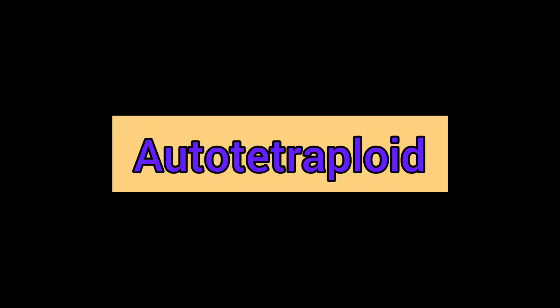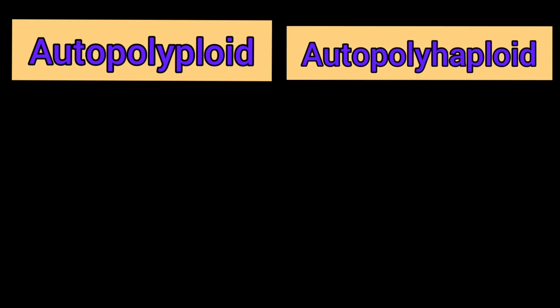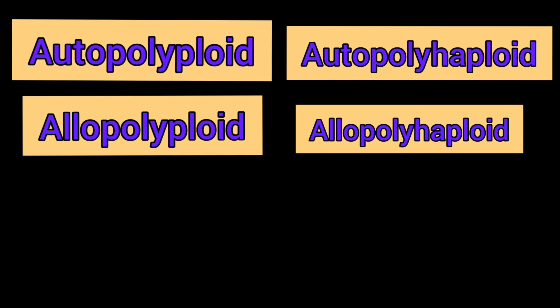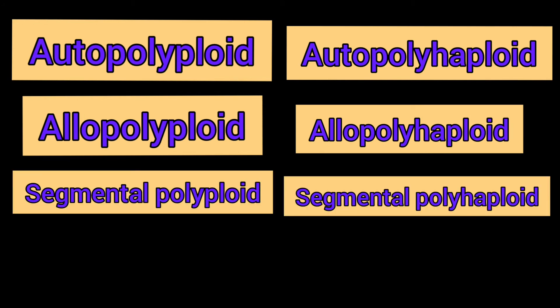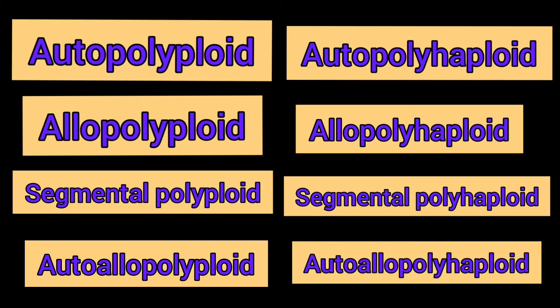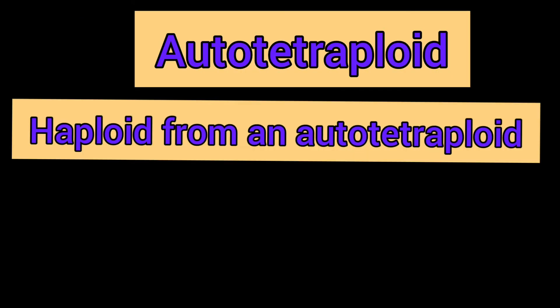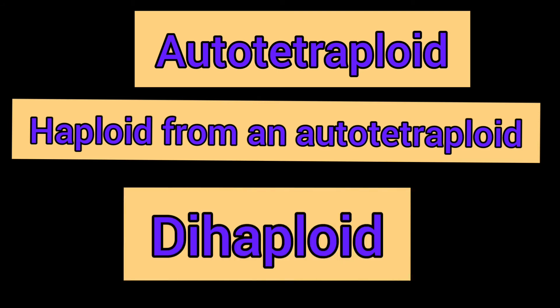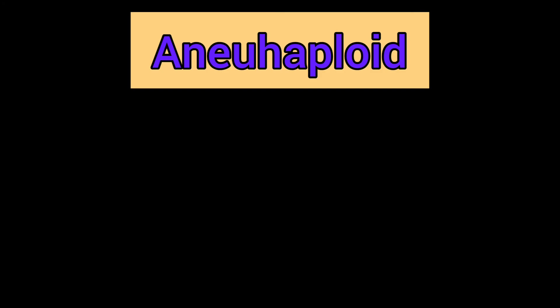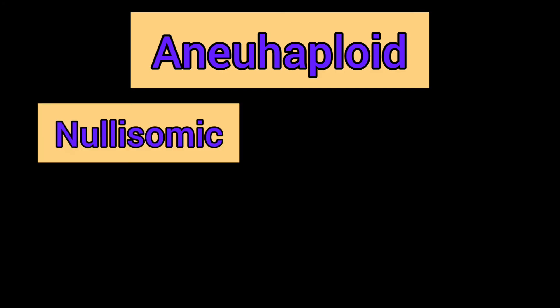The naming convention is straightforward: autopolyploid gives auto polyhaploid, allopolyploid gives allo polyhaploid, segmental polyploid gives segmental polyhaploid, and auto allopolyploid gives auto allo polyhaploid. The only special case is the autotetraploid — a haploid from an autotetraploid is specifically called a dihaploid. Moving on, aneuhaploids are of five types.